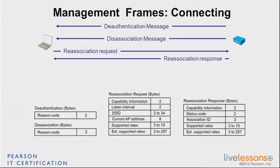Looking at the de-authentication and de-association frames, the only thing you really say is the reason — why you are being removed. The re-association request and re-association response are structured exactly like the association request and association response; the subtype is different so we know you're coming back, but the information exchanged is exactly the same.